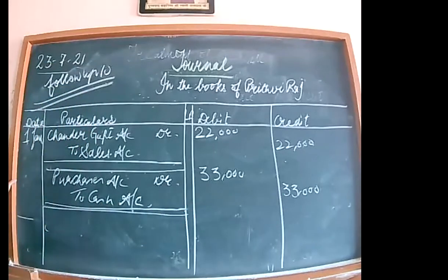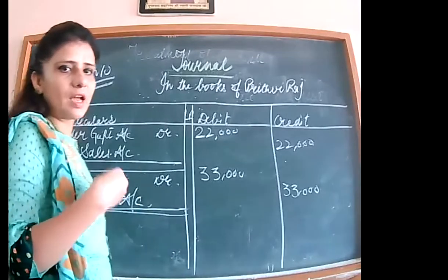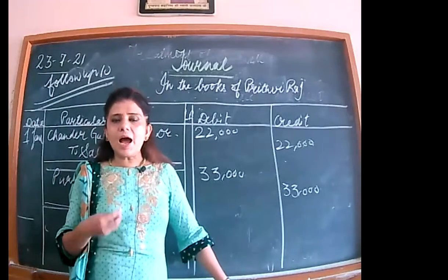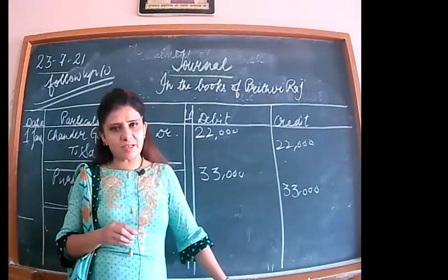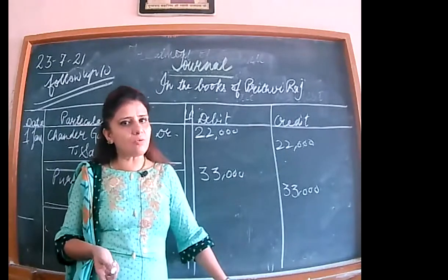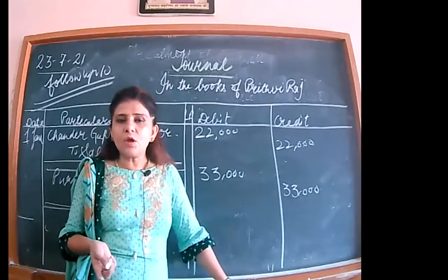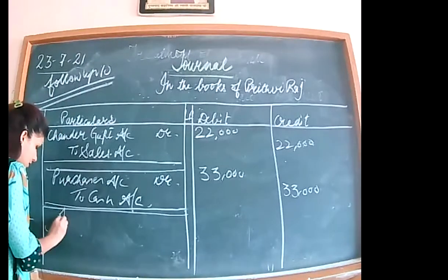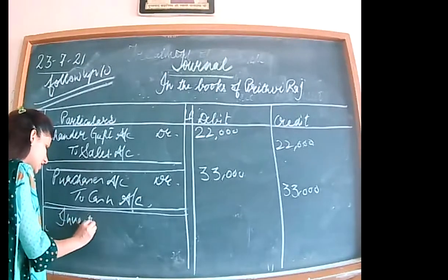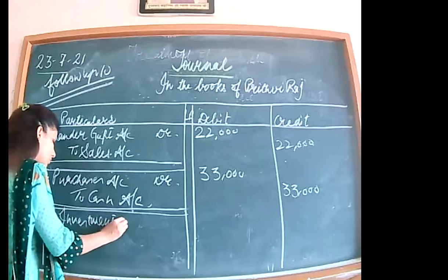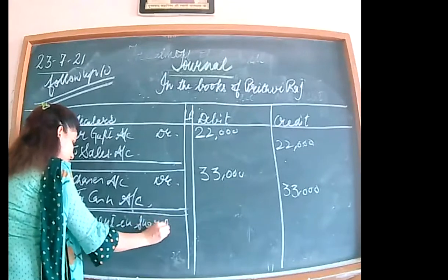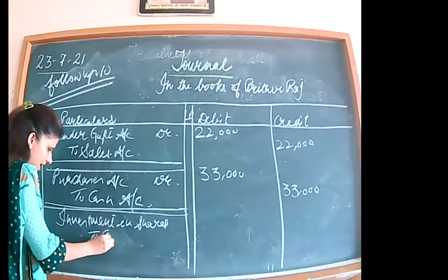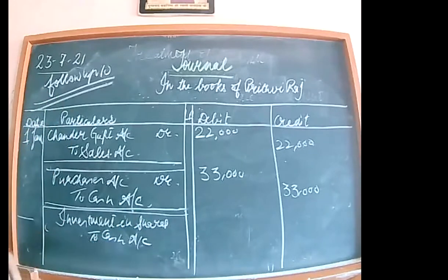Next transaction: purchase shares for cash. In the share market, you can call the entry shares account debited to cash, or investment in shares account debited to cash. Because it is a sort of investment, I will call it investment only — investment account debited to cash — Rs. 44,000.